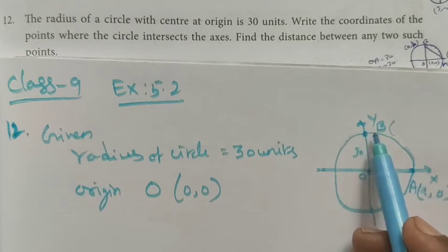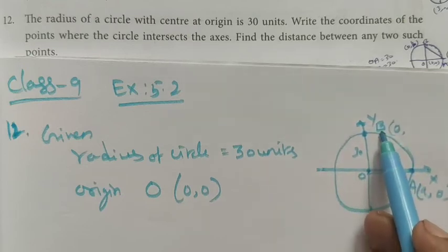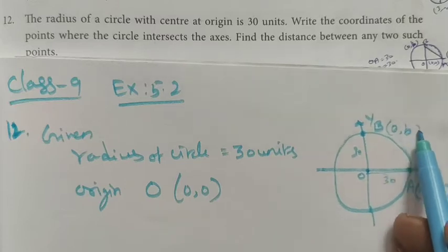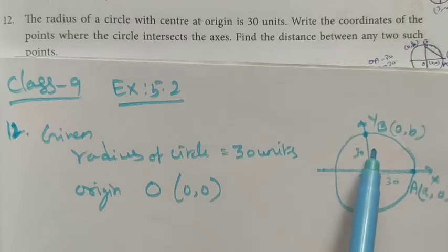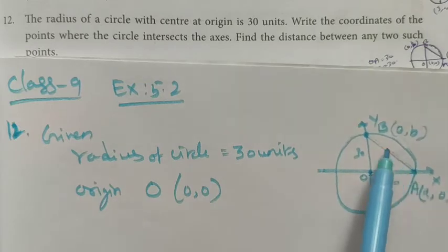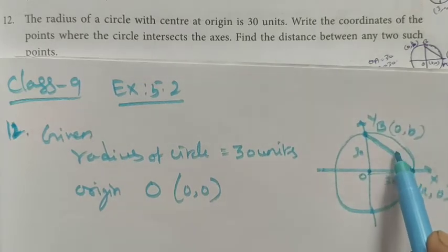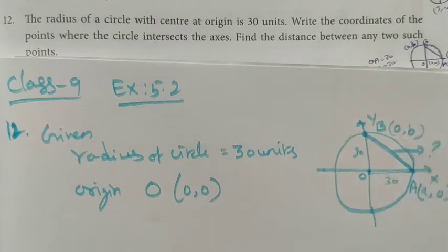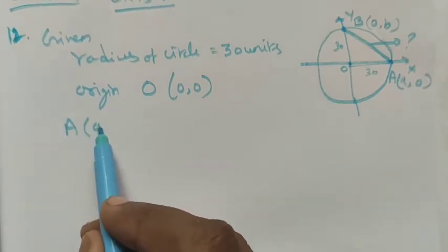On the y-axis, x is equal to 0. Point B lies on the y-axis. The distance between any two such points: we find the distance between A and B. We have point A as (a, 0) and point B.